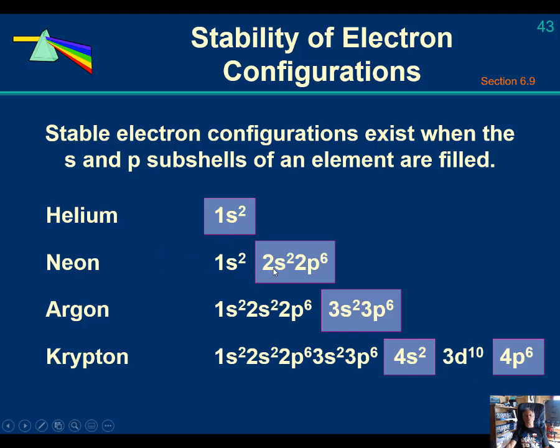You have a 1s2 2s2 2p6. There's two electrons in the 2s and six electrons in the 2p. Two plus six is eight. Eight electrons is the magic number for stability when the S and P subshells are completely filled.